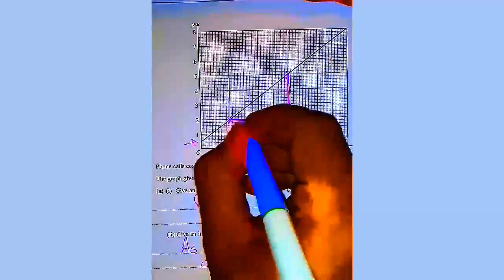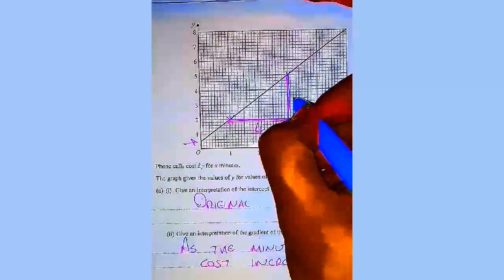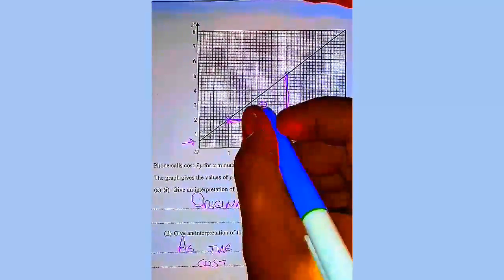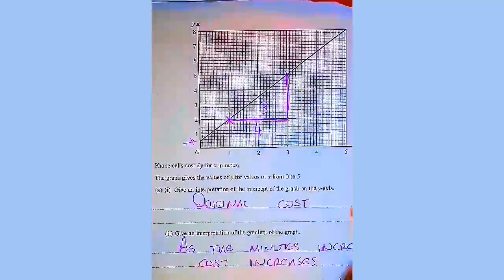I draw my right angle triangle. My base is one, two, three, four. My height is one, two, three, which means my gradient is going to be three quarters because it's your height divided by your base.